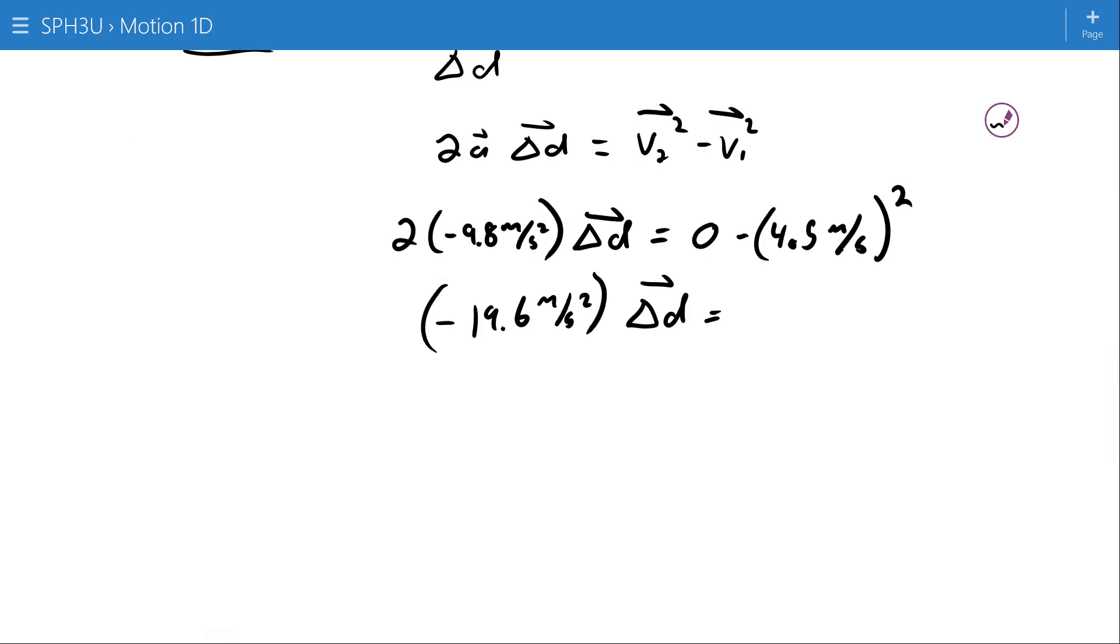And I got 4.5 squared. Use my calculator for 20.25 meters squared per second squared. Divide both sides by negative 19.6. Negative vertical displacement of 1.03 meters.